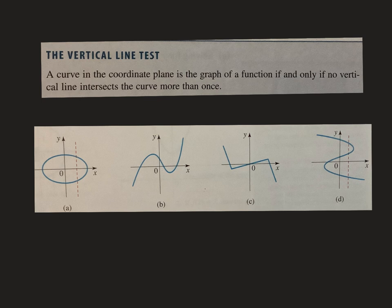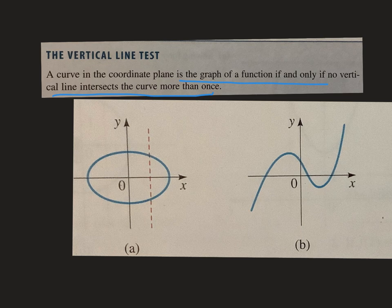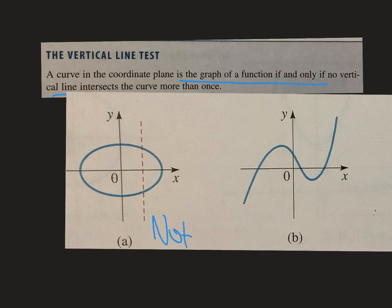The vertical line test says a graph is a function if and only if no vertical line intersects the curve more than once. Okay. So these are already done for you, to be honest with you. If you look down here, this first one, see how the vertical line crosses that one, that ellipse more than one time. It's twice. So it would be not a function. So, you know, we say it's not a function. It's not one.